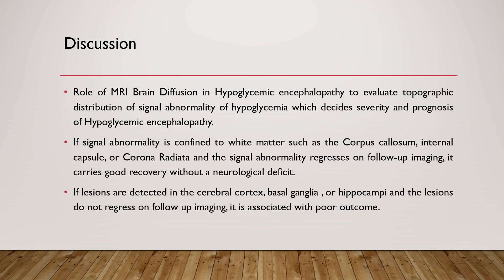The role of MRI brain diffusion in hypoglycemic encephalopathy is to evaluate the topographic distribution of signal abnormality, which decides severity and prognosis. If signal abnormality is confined to white matter such as corpus callosum, internal capsule, or corona radiata, and regresses on follow-up imaging, it carries a good recovery without neurological deficit. If lesions are detected in the cerebral cortex, basal ganglia, or hippocampi and do not regress on follow-up imaging, it is associated with poor outcome.